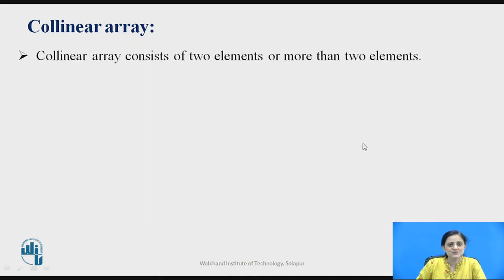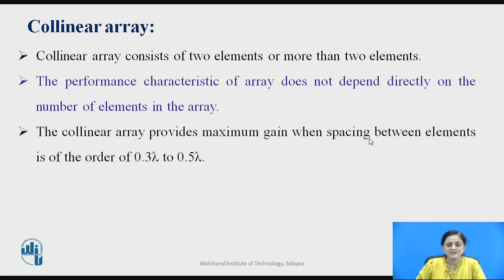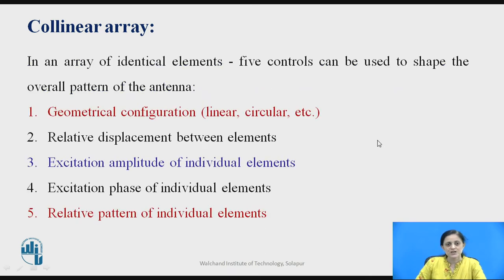A collinear array consists of two or more elements. The performance characteristics of the array do not depend directly on the number of elements used. The collinear array provides maximum gain when the spacing between each element is in the order of 0.3 lambda to 0.5 lambda. By providing this spacing between the elements, you can get maximum gain and directivity of an antenna.